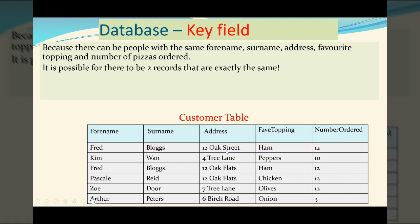You can see we've got Fred Bloggs here, 12 Oak Street, ham, and 12 pizzas ordered. We've got another Fred Bloggs. It's perfectly reasonable for that to happen. 12 Oak Flats, tiny bit different than the address. Same favorite topping, same number of pizzas ordered. So it'd be quite difficult to tell those two Fred Bloggs apart. So how could we add perhaps a field to this database that will allow us to tell all of our records apart?